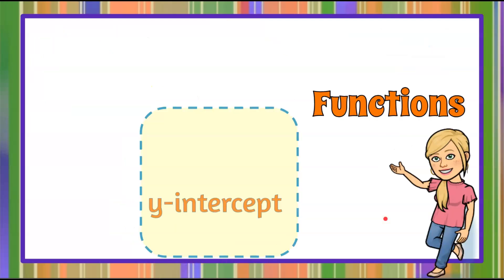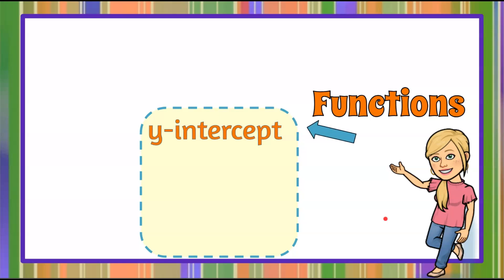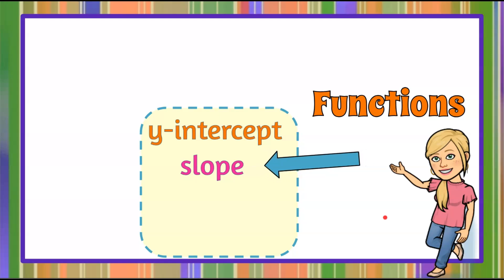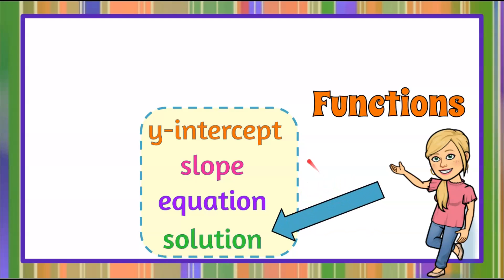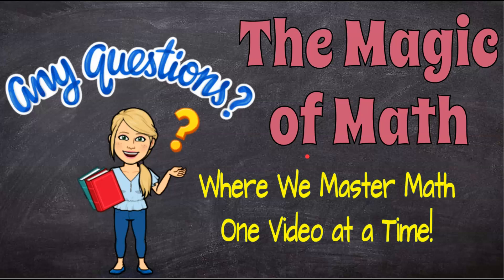So there you have it. That is how we use a table of a function to find the y-intercept, the slope, how we write the equation of the line, and how we determine if a point is a solution to the function. Thanks for joining me today at The Magic of Math, where we continue to master math one video at a time. I hope you come back soon — have a great day!